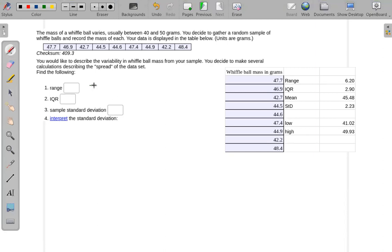Your range is always the maximum value minus the minimum value. Your IQR is always Q3 minus Q1.